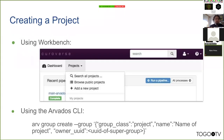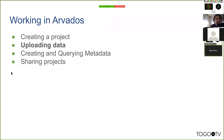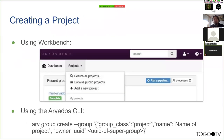In Workbench there's a button at the top called Projects — you can also create them through the command line interface with 'create group of class project'. A project is the unit of organization for the other object types. Your data collections, workflows, and process executions of workflows are all owned by a project generally, or owned by a user. Projects can own other projects, so you can create a hierarchy. It's used as a unit of organization and also as a unit of sharing — you can share an individual project with other people.